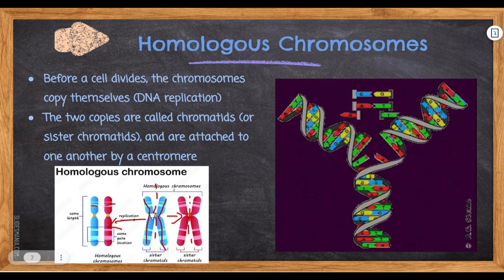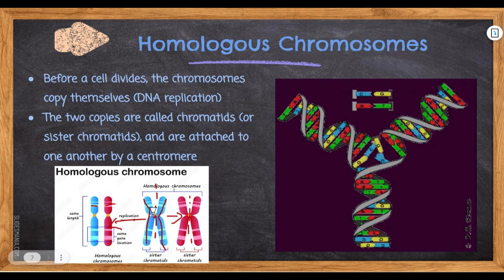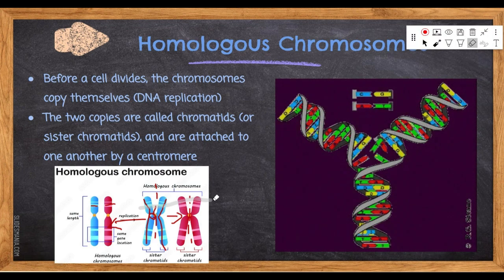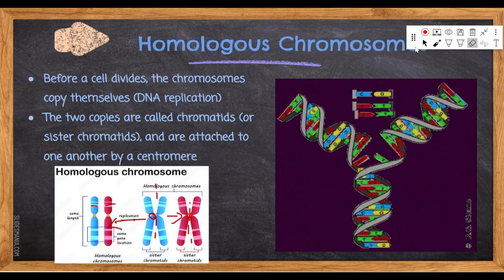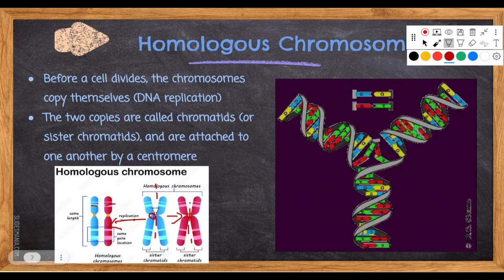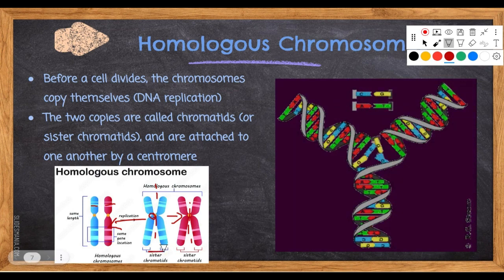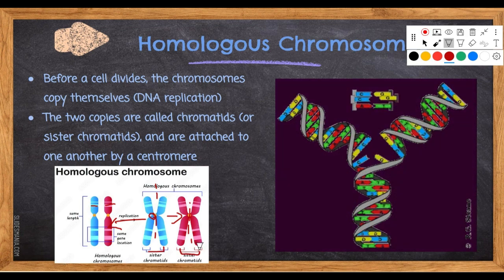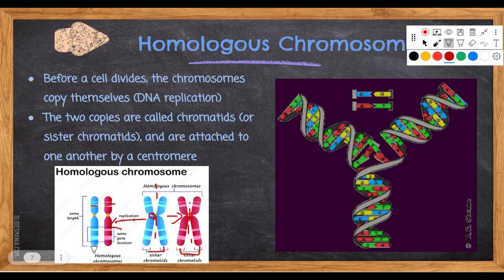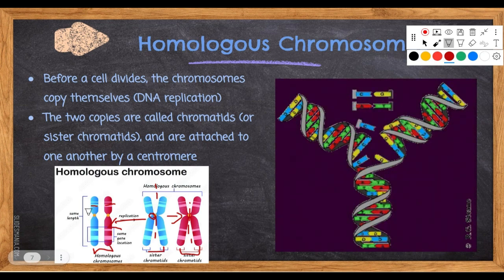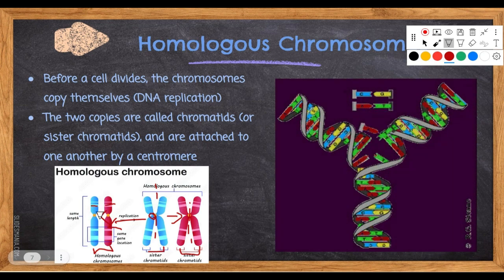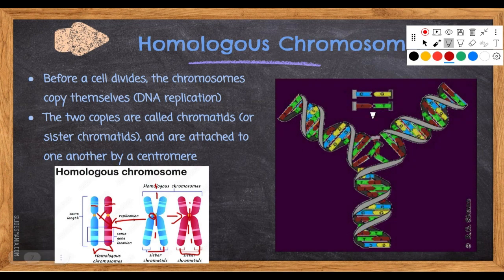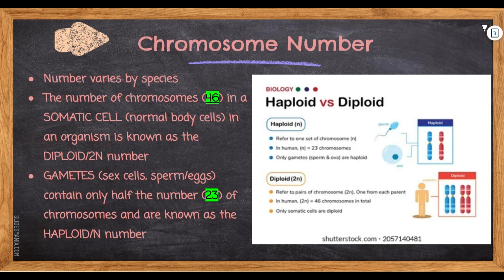Another reminder: if chromosomes are connected by the centromere, they are sister chromatids. So this blue one is a sister chromatid to the other blue one, and this pink one is a sister chromatid to the other pink one. The blue and pink ones are not sister chromatids because they are not connected by a centromere. Only if they're connected by a centromere are they sister chromatids.